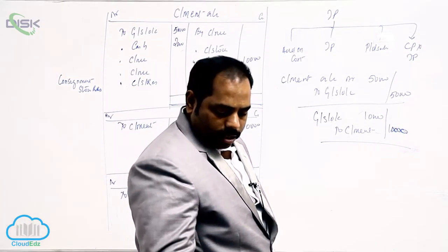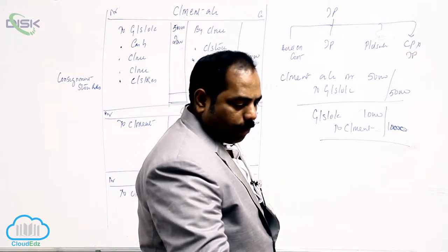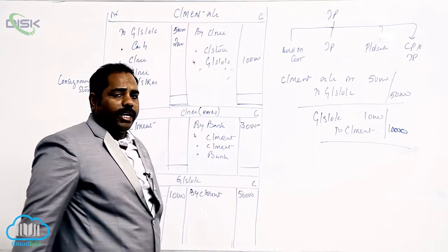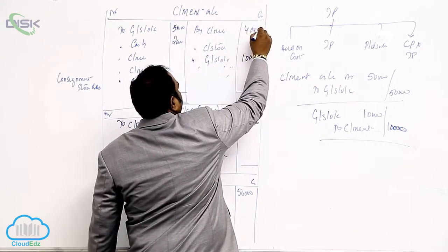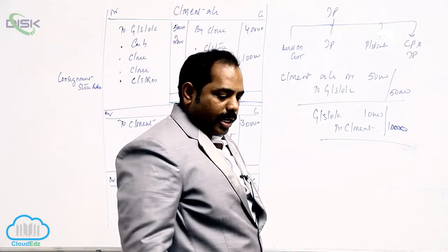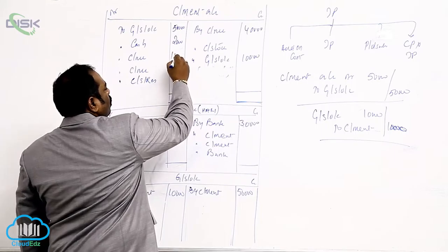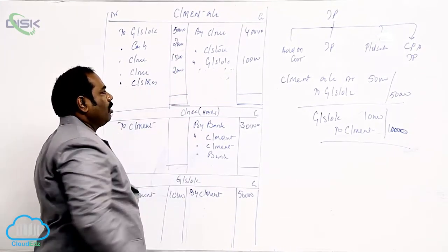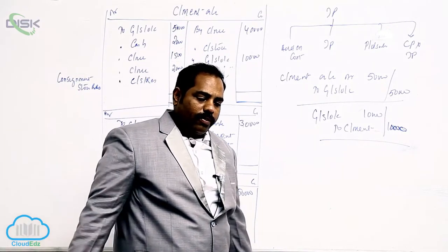Hari sent an account sales stating that 80 boxes were sold at 500 each. 80 into 500 is 40,000. By Consignee it is 40,000 for sales. His expenses were 1,500 towards selling expenses - these are expenses made by the consignee, so 'To Consignee' is for expenses. Commission is directly given as 2,000. So 'To Consignee' is for commission as well.